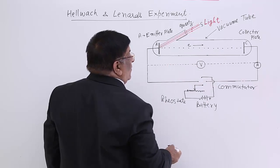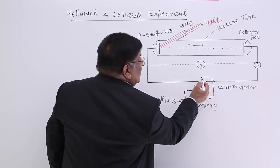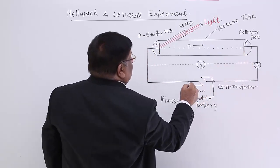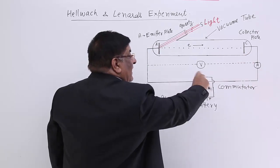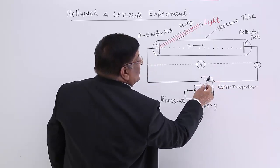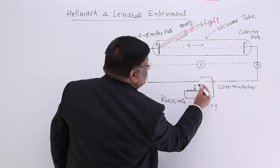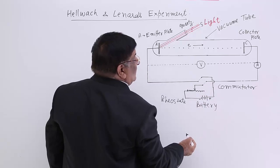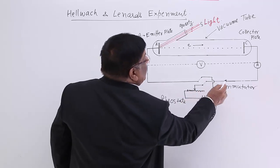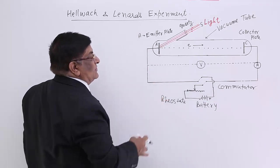A resistance is connected in series, and with the change of this resistance we can change the potential difference across this. The direction can be changed by this commutator. This arm is connected such that when you rotate the commutator, the contacts swap — this contact comes here and this contact goes there — reversing the polarity. It is a changeover switch, which is the commutator that can change the direction of current.